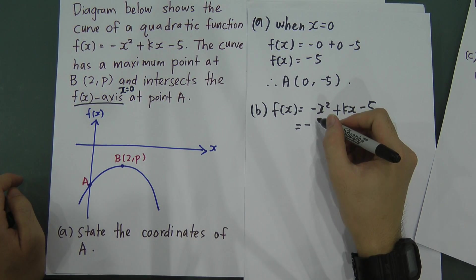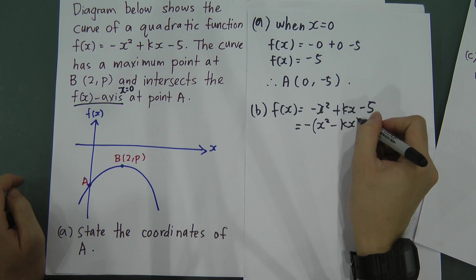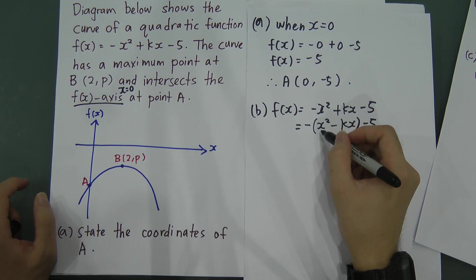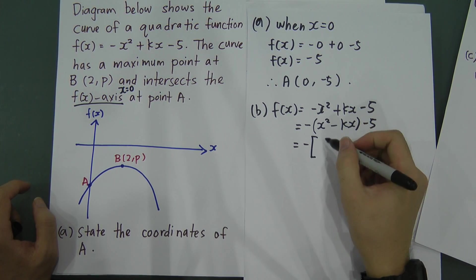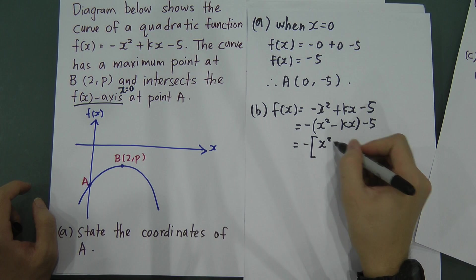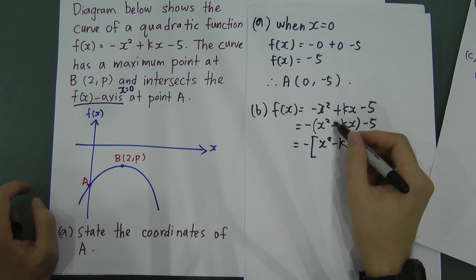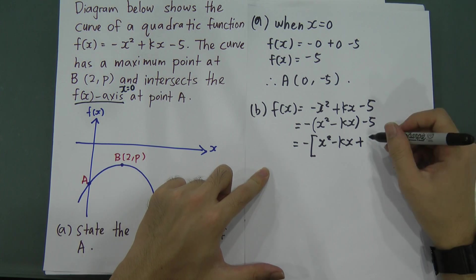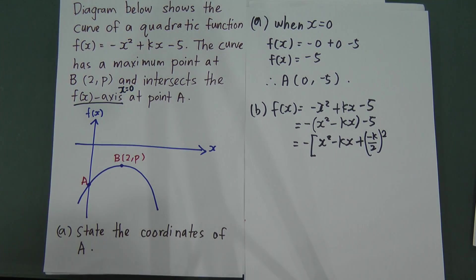After factorizing out the negative, I get -(x² - kx) - 5, and now the x² is positive 1. I can start the completing the square method. So I take x² - kx, and add (−k/2)², writing: -(x² - kx + (−k/2)²) and then subtracting (−k/2)² to balance.